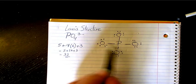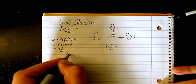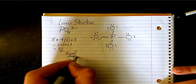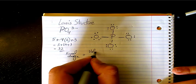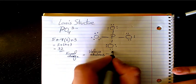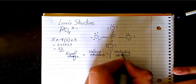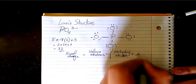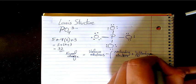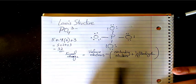That accounts for all 32 electrons: 24 on the oxygens plus 8 in the bonds equals 32. Now let's check the formal charge. The formal charge equals the valence electrons minus the non-bonding electrons minus half of the bonding electrons.